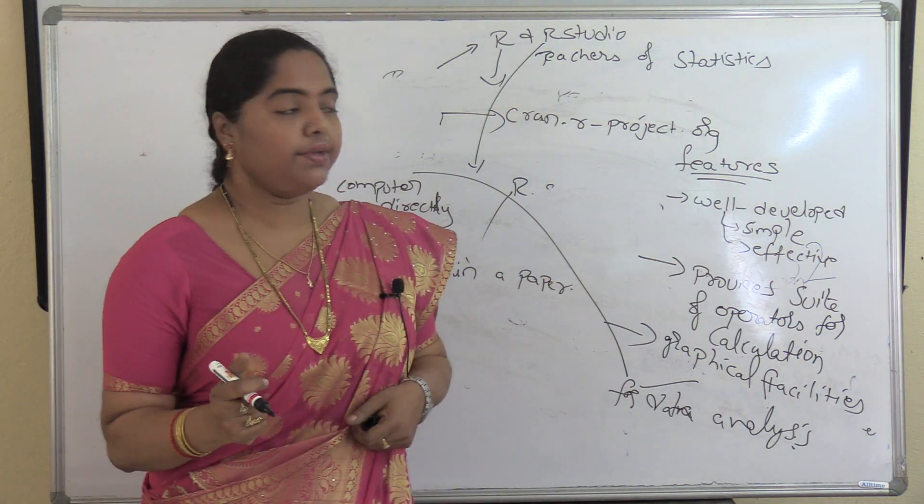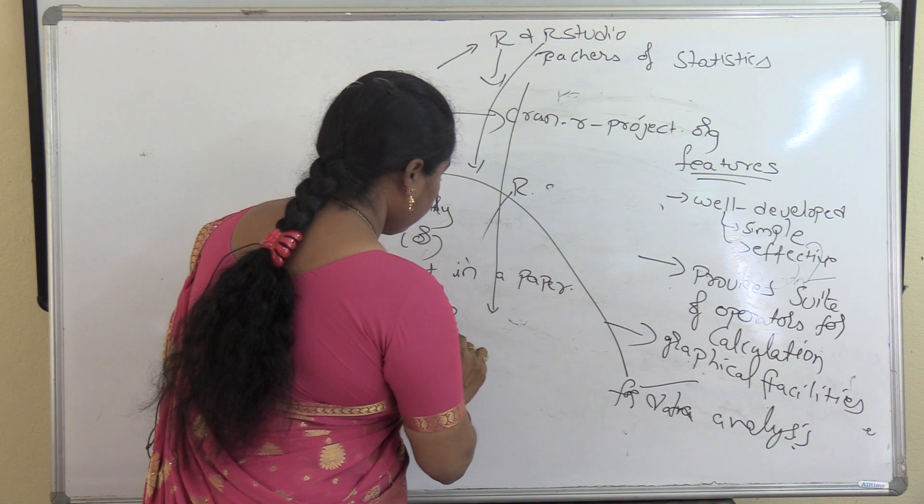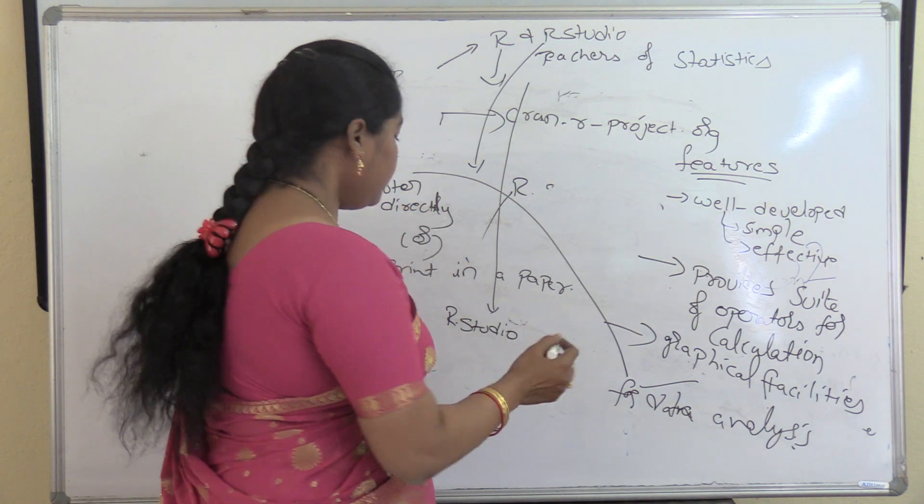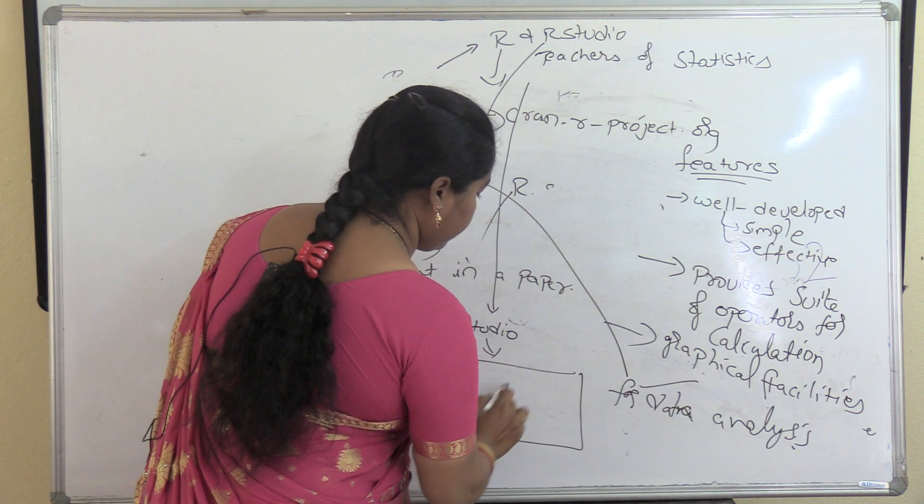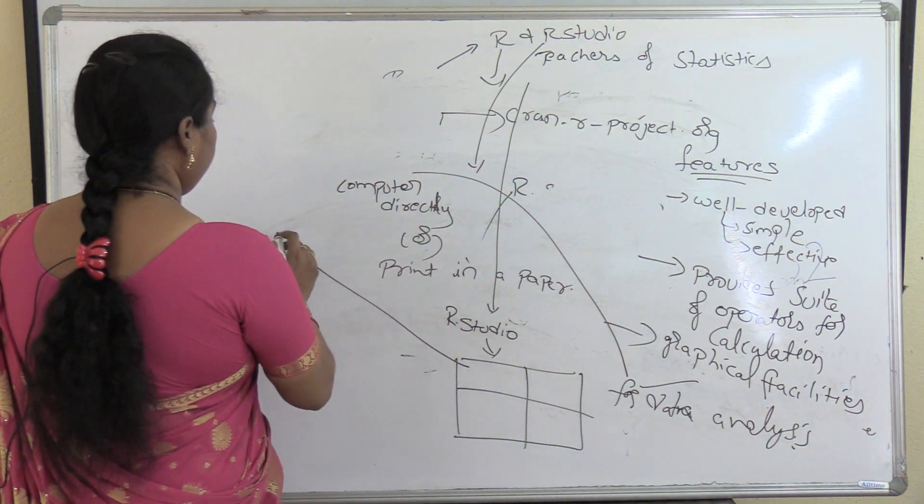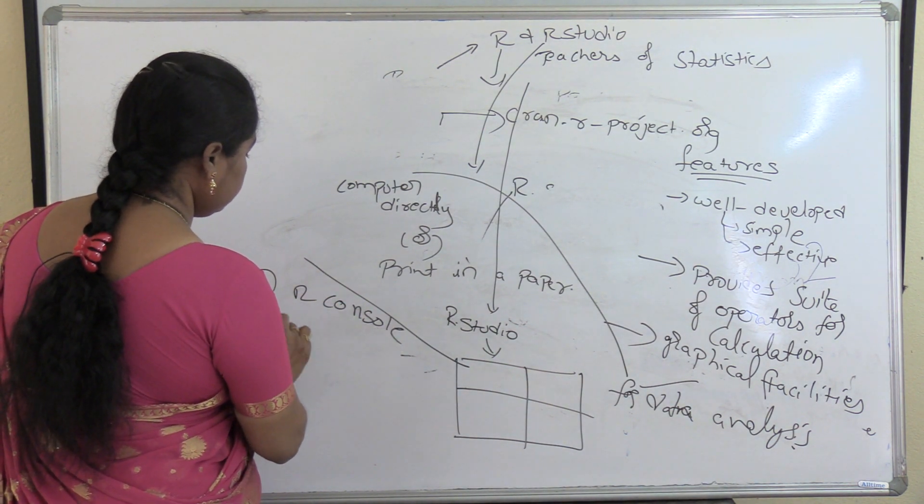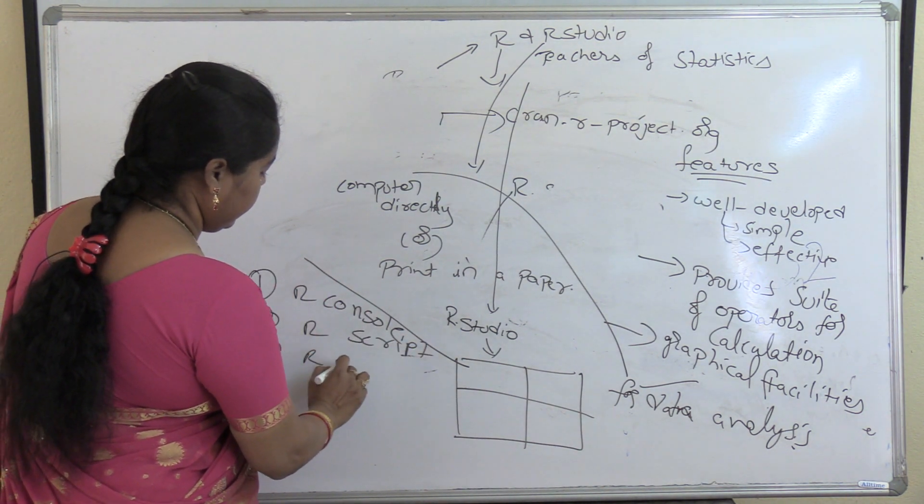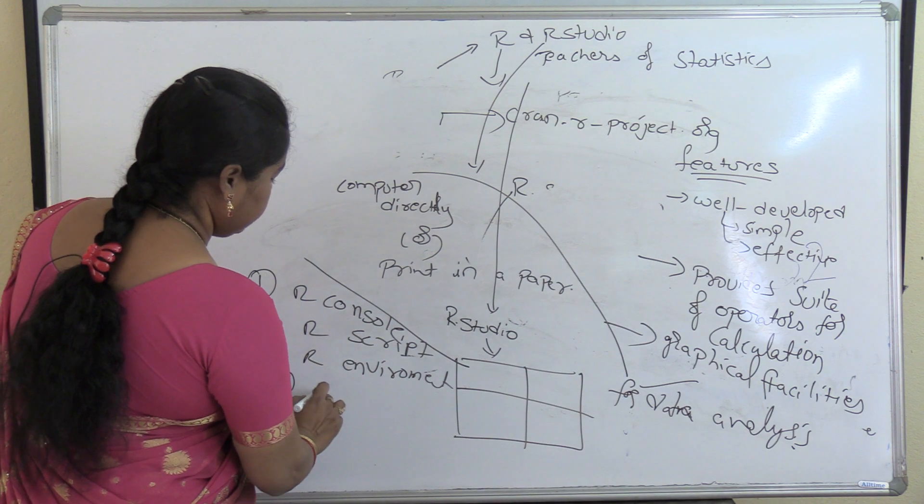If we go to installation, after the installation, there is an interface, R studio. It is an interface to use the R programming language. In this interface, after the installation, you are going to get four different parts in this R studio. These four parts are: first one is R console, second one is R script, third one is R environment, and the last one is graphics.